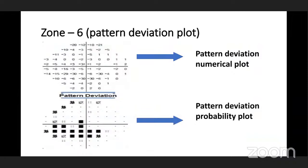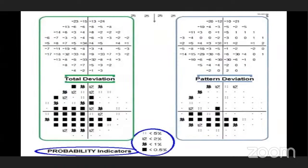In total deviation, there are more black squares due to reduced retinal sensitivity. But in pattern deviation, compared to total deviation, they are reduced — it has filtered and gives the original data. The main aim of pattern deviation is to filter out and reveal true retinal sensitivity.